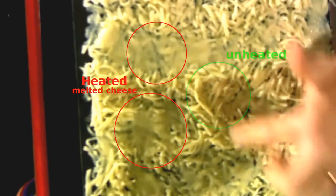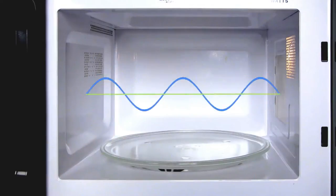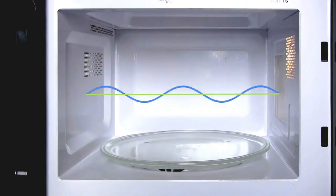You can see on here sections where the cheese is completely melted and other sections where it's completely unheated. The oven's metal walls only reflect waves of a length that fits inside the oven. This standing wave causes hot and cold spots inside the oven.